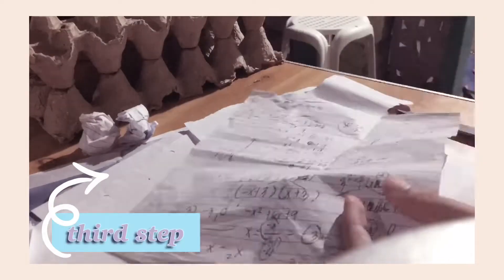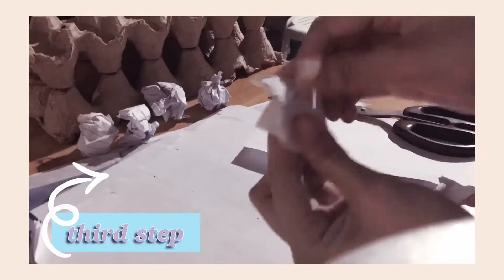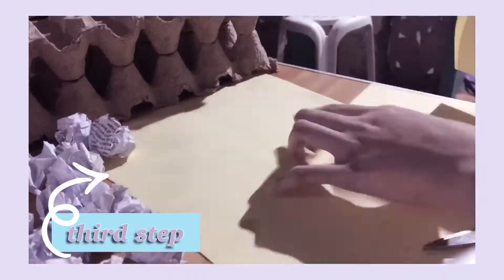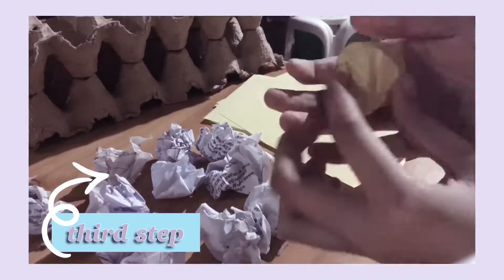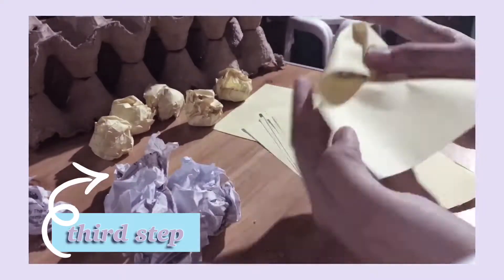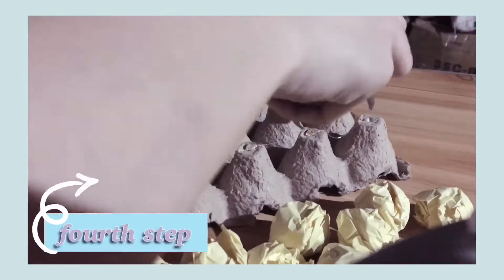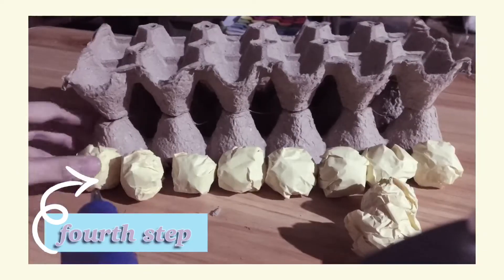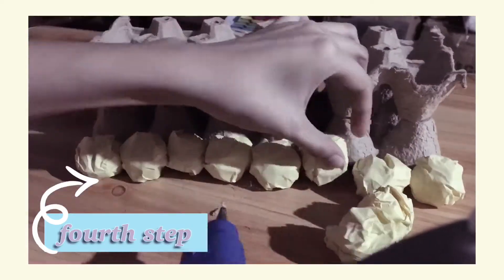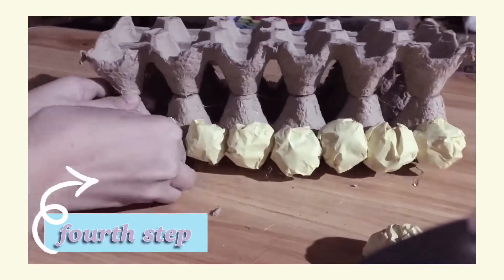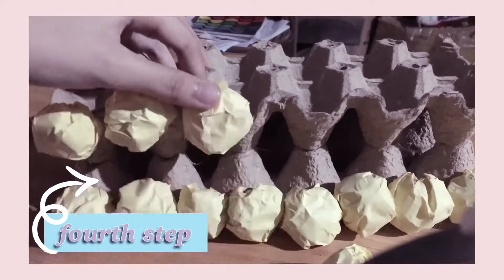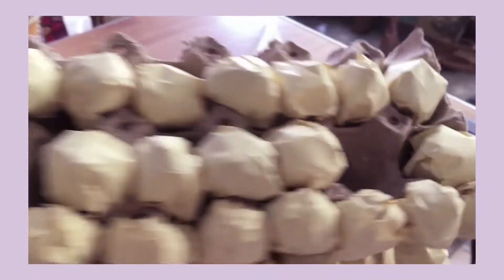We are now on the third step and as you can see I crumpled all the papers, and then I cut the construction paper to cover it up. Glue the two trays and also the crumpled papers. And here is our finished product.